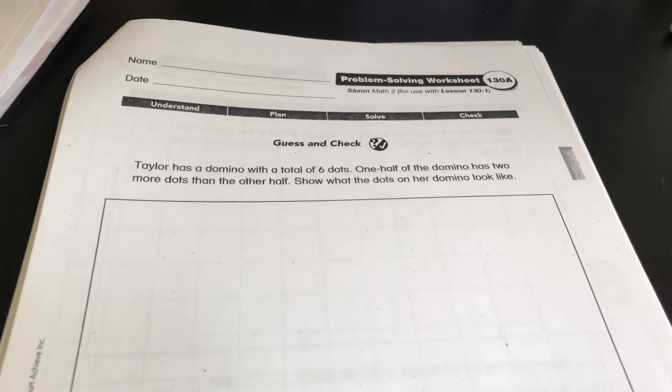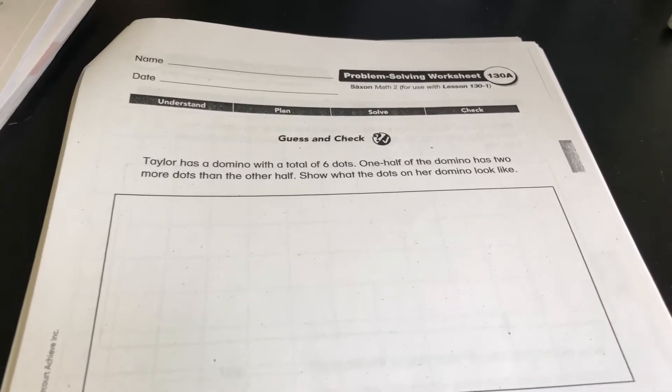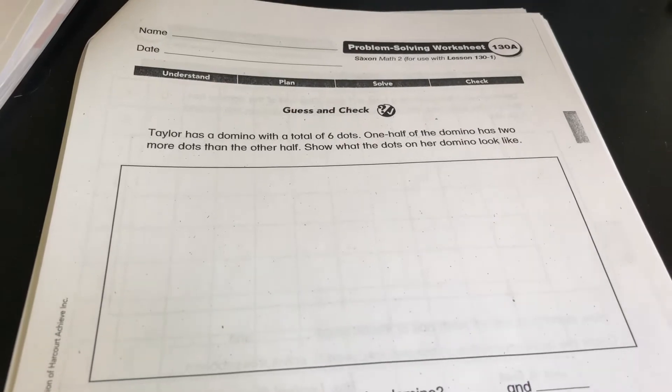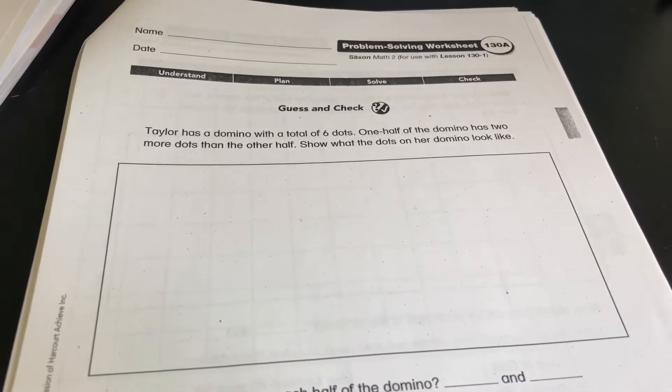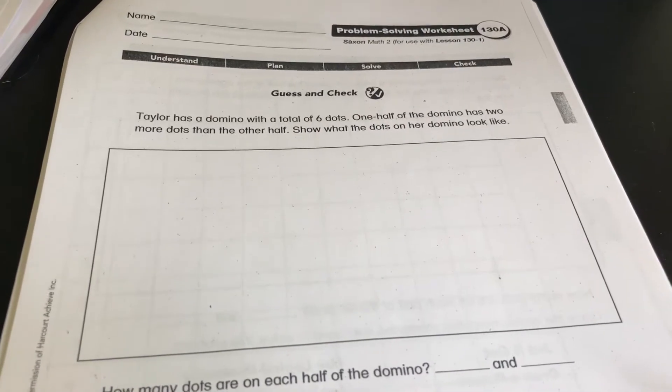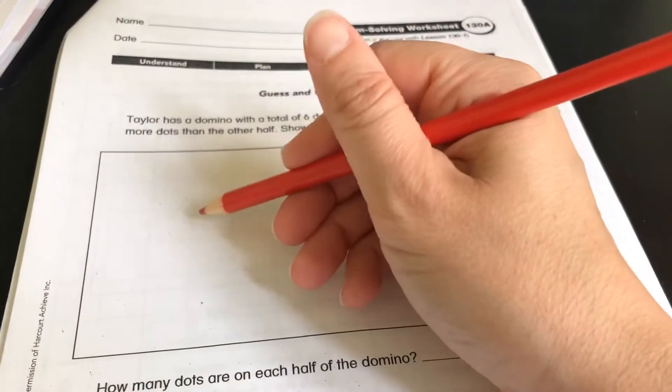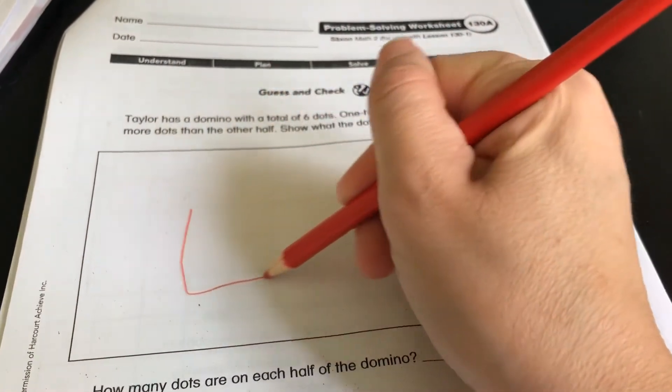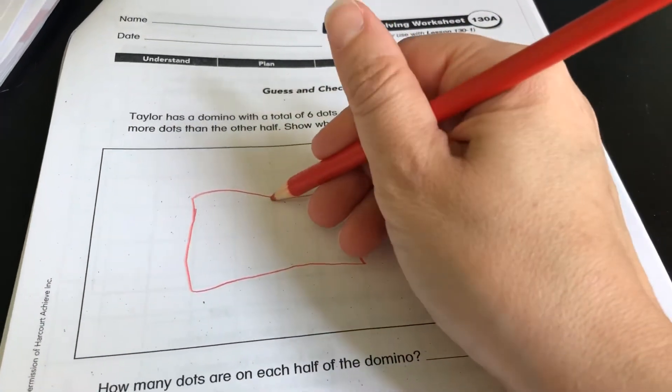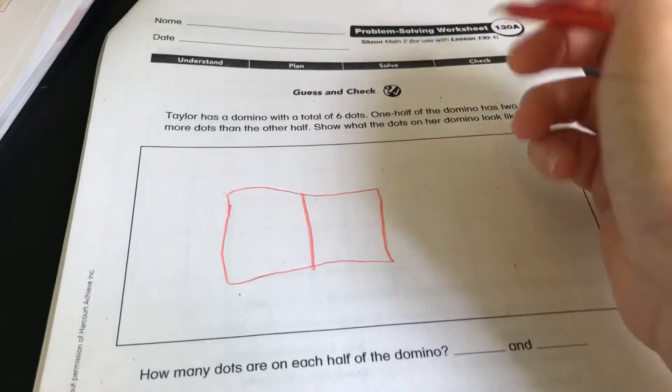And the question says, Taylor has a domino with a total of six dots. One half of the domino has two more dots than the other half. Show what the dots on her domino look like. So the first thing I want to do is draw myself a domino.